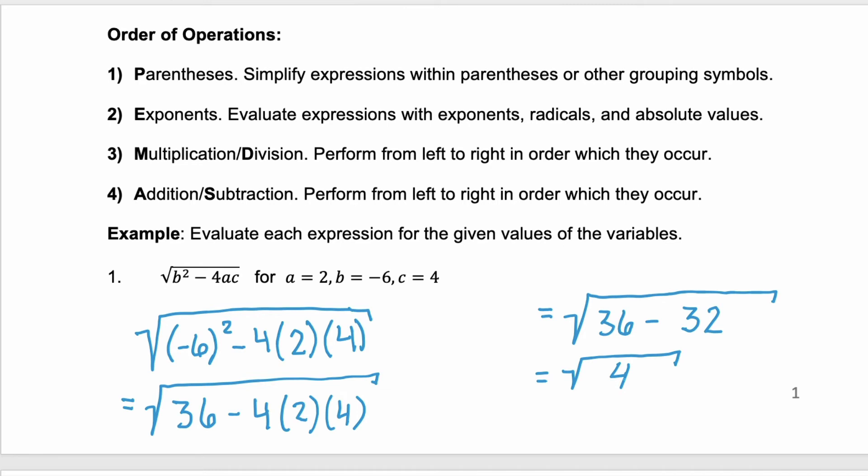So we have completed everything inside of the radical, which remember the radical is a type of grouping symbol. And now we can calculate the square root of four, which we've done previously. And that would be two.